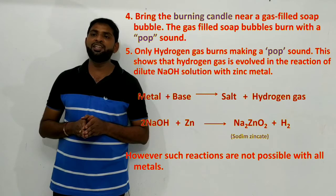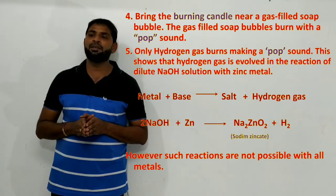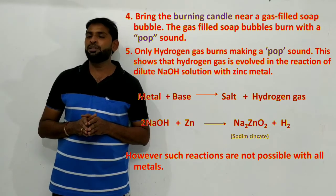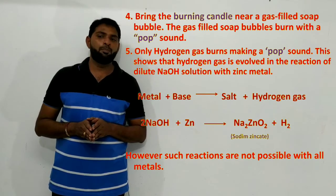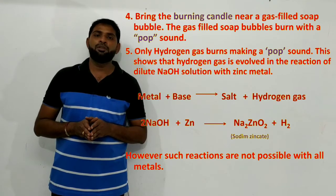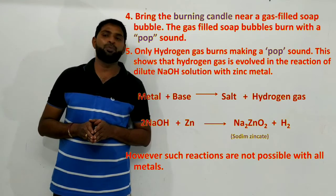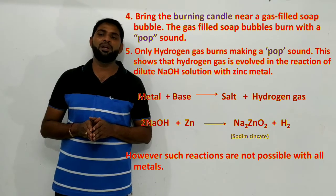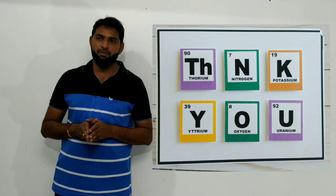This shows that hydrogen gas is evolved in the reaction of dilute NaOH solution with zinc metal — when a metal reacts with a base, it gives salt plus hydrogen gas. The equation is: 2NaOH + Zn → Na₂ZnO₂ (sodium zincate) + H₂. However, such reactions are not possible with all metals. Thank you for watching this video.